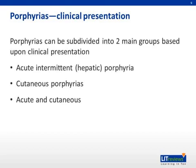We can further describe porphyria by clinical manifestations, which include either neurologic symptoms or cutaneous lesions and skin pain. Overlap is often seen in several porphyrias, as patients can present with both neurologic and cutaneous manifestations of their disease.